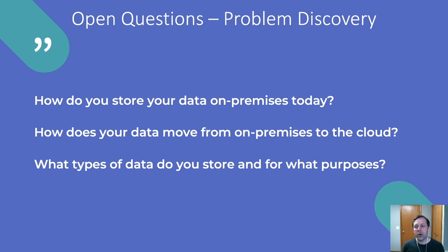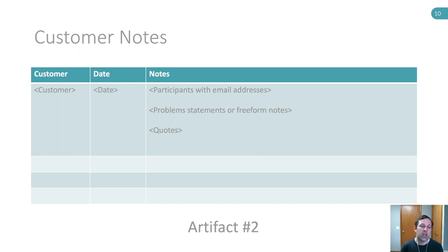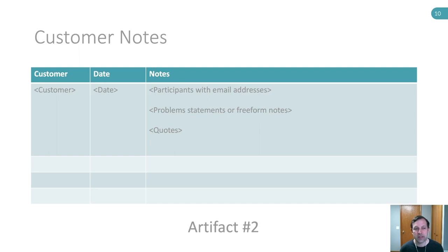What that should yield over a number of customer conversations is a set of problems. The notes that you take for these conversations are really important — they become a record you can use later for various purposes. Some things I've found useful to keep in the notes: email addresses, so you can follow up and potentially make more contacts at that customer; problem statements — free-form notes are great, but if you can also write out the specific problems those customers had, that's going to help you organize your customer notes later; and quotes — if the customer has a really clear pain point they might give you a great quote around that pain point, and that's going to help you later on.